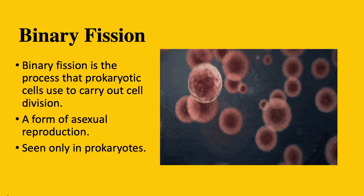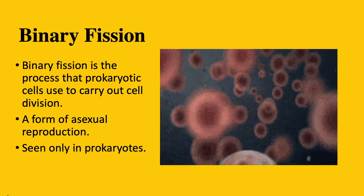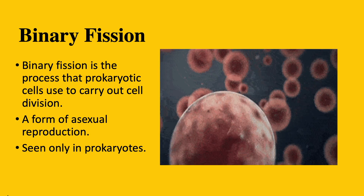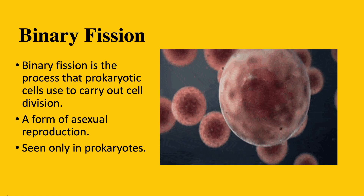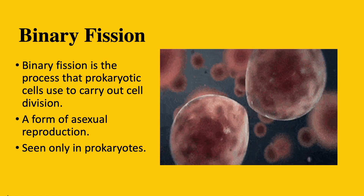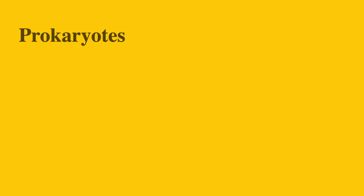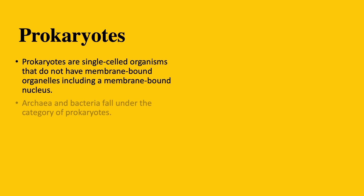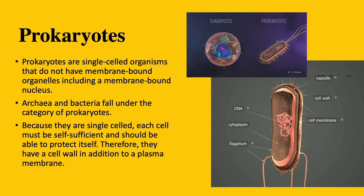Binary fission is a process that prokaryotic cells use to carry out cell division. It is a type of asexual reproduction and is only seen in prokaryotes. Prokaryotes are single-celled organisms that do not have membrane-bound organelles, including the membrane-bound nucleus.